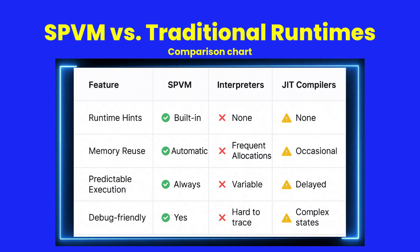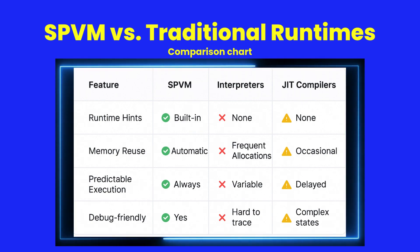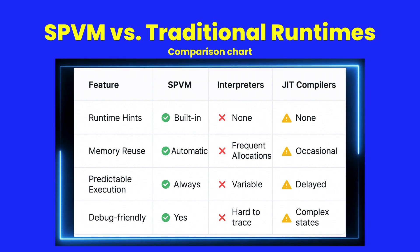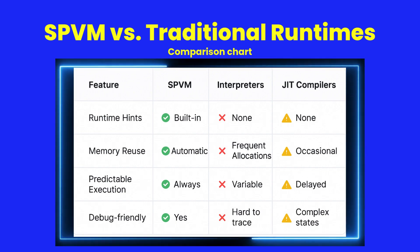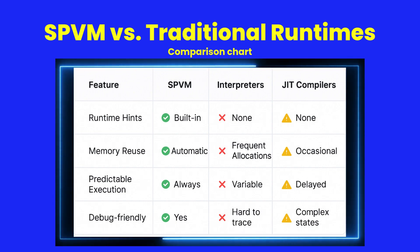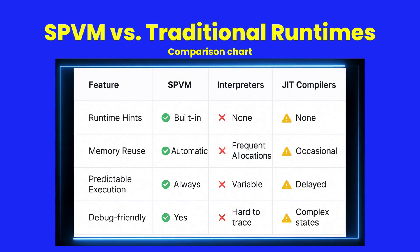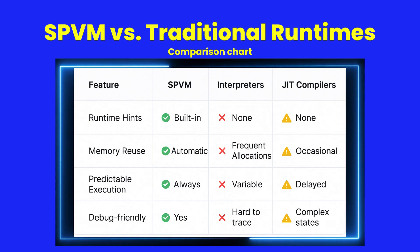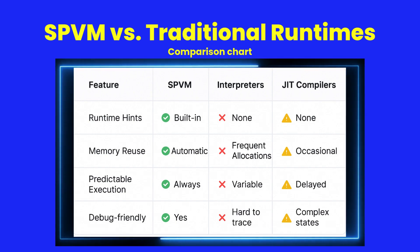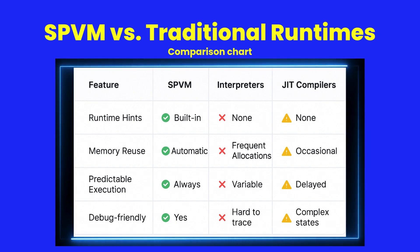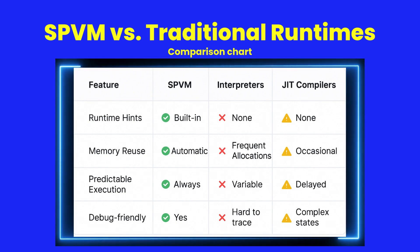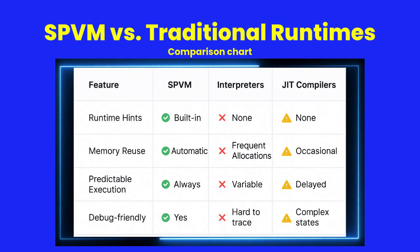ShearPower Virtual Machine, or SPVM, avoids the inefficiencies of traditional runtimes. Interpreters repeat everything. Just-in-time, or JIT, compilers guess what to optimize after the fact. SPVM skips the guesswork and does the smart thing immediately, every time.